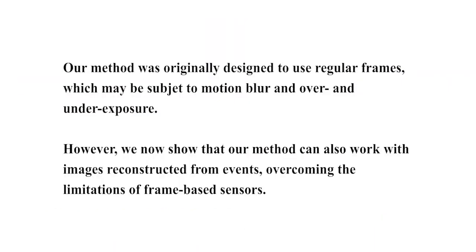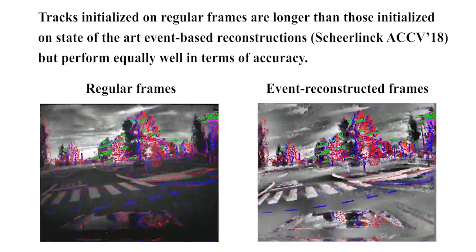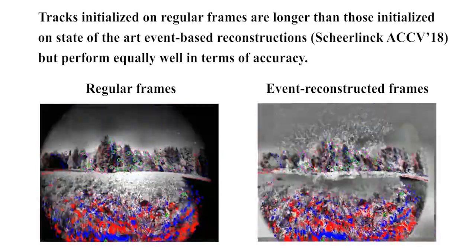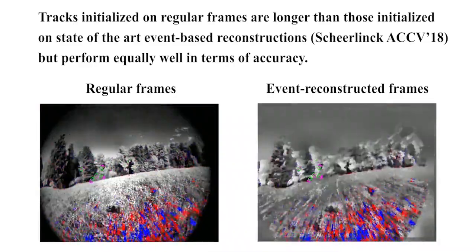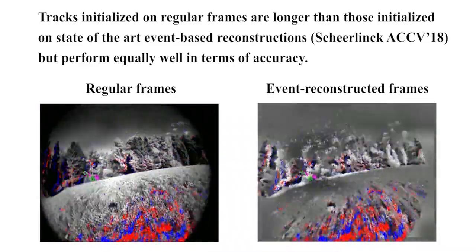Our method was originally designed to use regular frames which may be subject to motion blur and over and under exposure. However, we now show that our method can also work with images reconstructed from events overcoming the limitations of frame-based sensors. Tracks initialized on regular frames are longer than those initialized on state-of-the-art event-based reconstructions, but perform equally well in terms of accuracy.